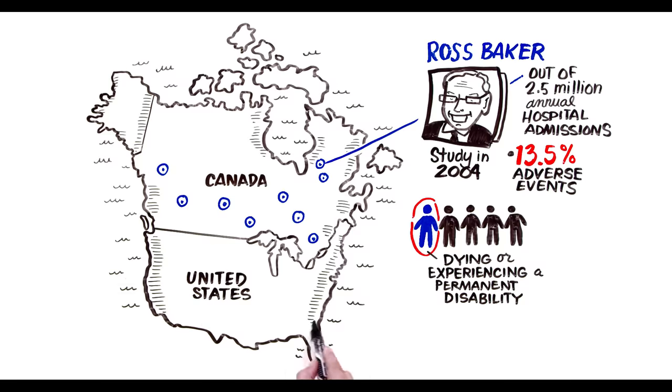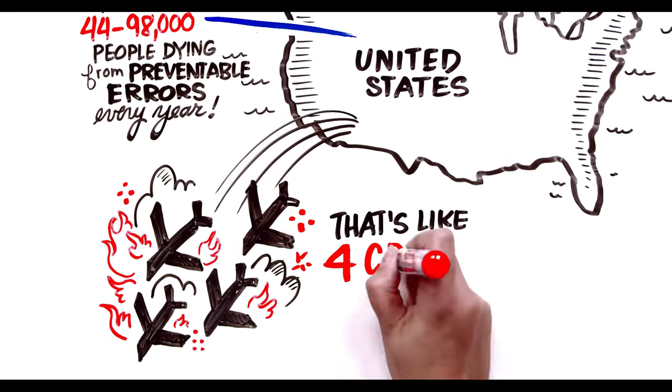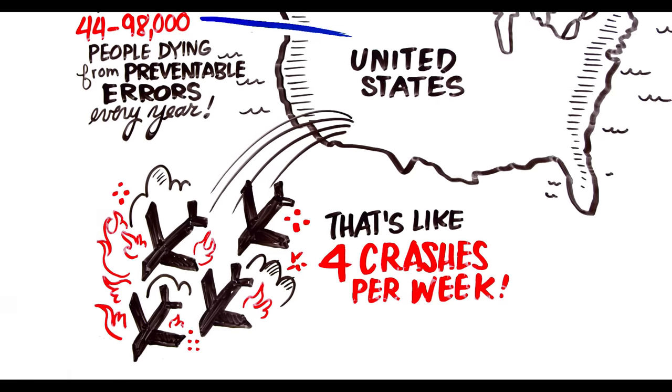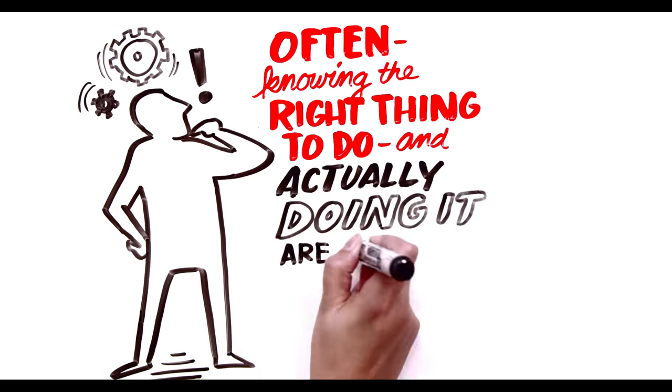In the U.S., the Institute of Medicine estimated that 44,000 to 98,000 people were dying from preventable errors every year. That's up to four jumbo jet crashes per week. Often these are errors we know how to prevent, but as is often the case, knowing what's the right thing to do and actually doing it are two different things.